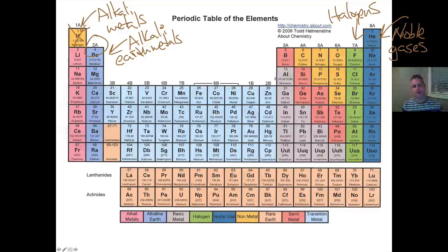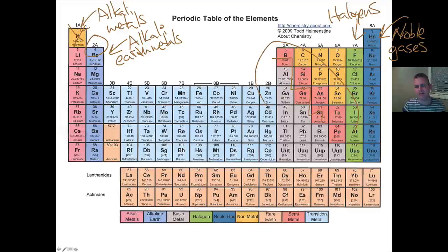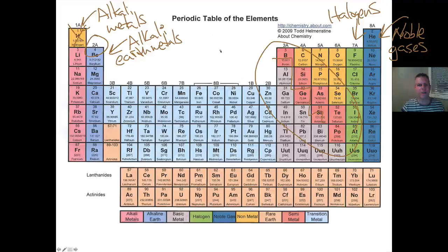As far as the metalloids are concerned, we talked about those before — they're found on this little staircase. You can see them here. They're the ones that are in kind of this pink area. They're called semi-metals, but they are metalloids.